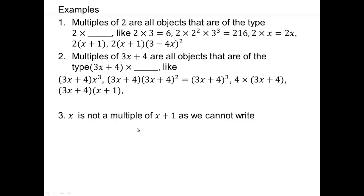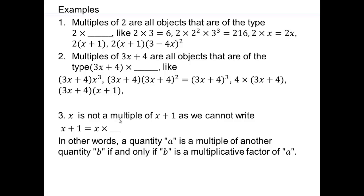x is not a multiple of x+1. How come? Because we cannot write x+1 as x times something — any time we write x times anything with an x term, it's going to be x squared. So x is an additive factor of x+1, but not a multiplicative factor of x+1. Therefore, x is not a multiple of x+1. A quantity A is only a multiple of B if B is a multiplicative factor of A — multiplicative, not additive.